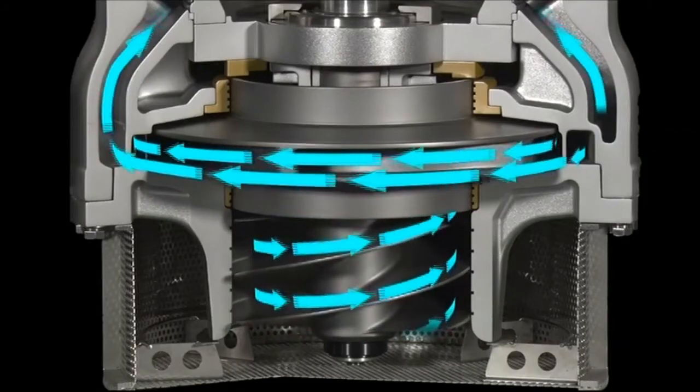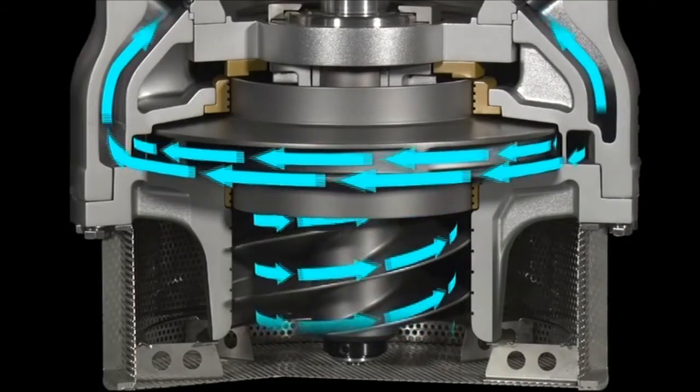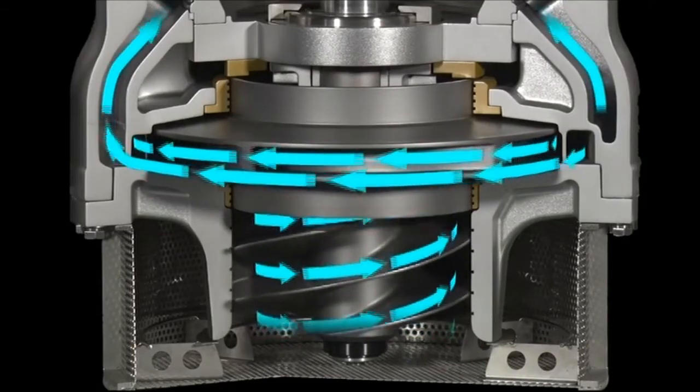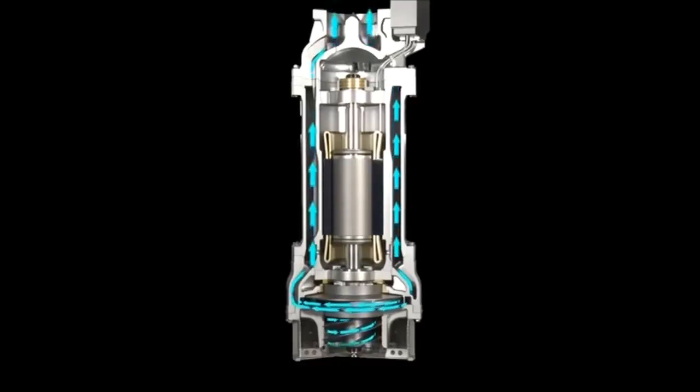LNG liquid is drawn into the impeller via the inducer located at the bottom of the pump. It then passes around the motor, goes through a check valve, and is discharged into the upper part of the pump.